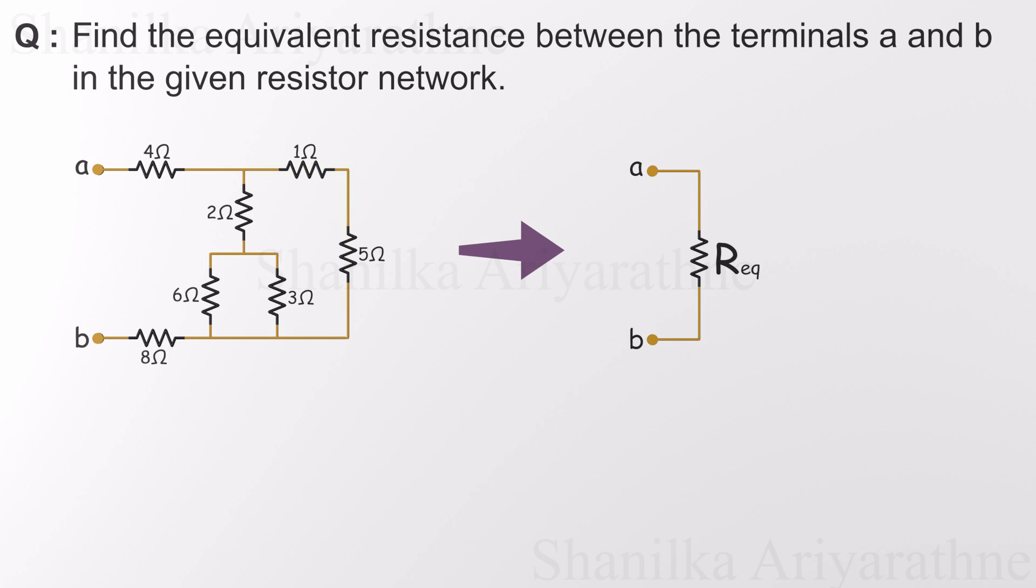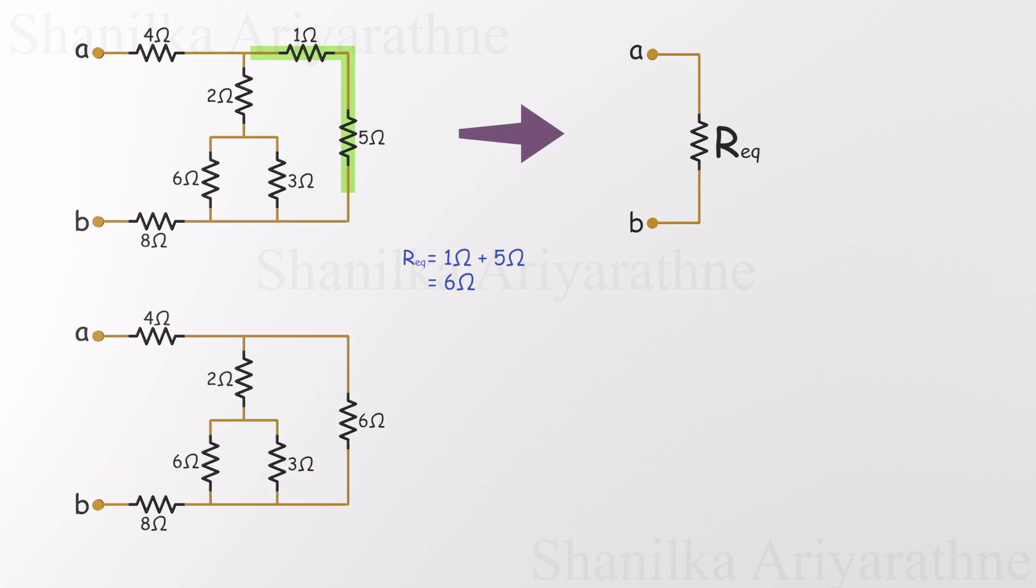First, let's look for any resistors in series. Right away, we can see that the 1-ohm and 5-ohm resistors are connected end-to-end with no branching in between. That means they're in series and we can simply add their values: 1 plus 5 equals 6 ohms. So we replace the 1-ohm and 5-ohm resistors with a single 6-ohm resistor. This simplifies the circuit just a bit and gets us one step closer to the equivalent resistance between points A and B.